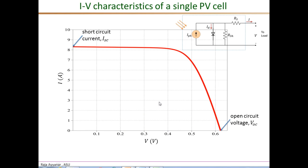This is the current-voltage or I-versus-V characteristic of a single PV cell studied in detail in earlier videos. Near very low voltages near zero, the diode current as well as the shunt leakage current are both negligible, resulting in the PV output current being equal to the photon current, also called the short circuit current ISC.